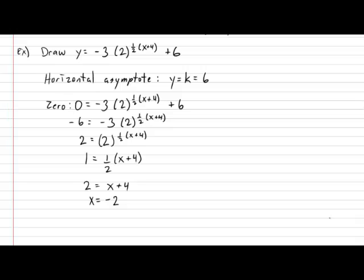Next, let's calculate the initial value. As usual, the initial value is calculated by setting x to zero and figure out your y value. So, in this example, we get that y = -3(2)^(1/2(0+4)) + 6. Simplifying, we get y = -3(2)^2 + 6.